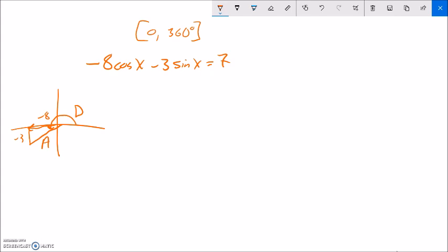So I can use Pythagorean theorem to find A. Square root of 9 plus 64, that's the square root of 73. So, so far I know I have root 73 of cosine X and then some shift. So I have to figure out what D is.